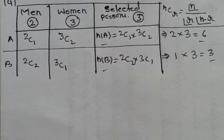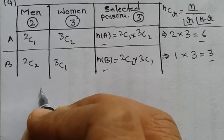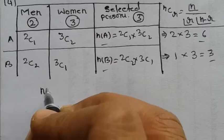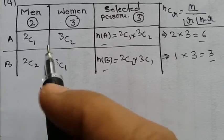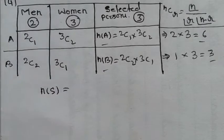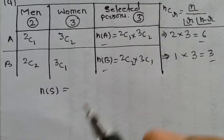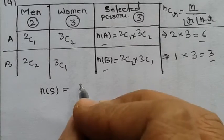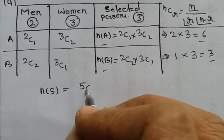For the total sample space, we have 5 people in total (2 men + 3 women), and we need to select 3 people. So the total number of ways is 5C3, which equals 10. This is our N(S).